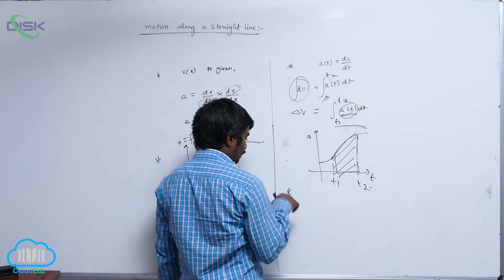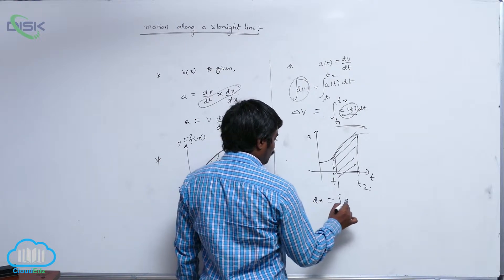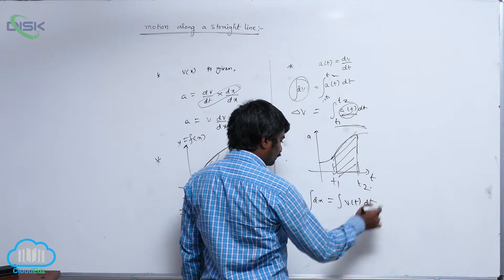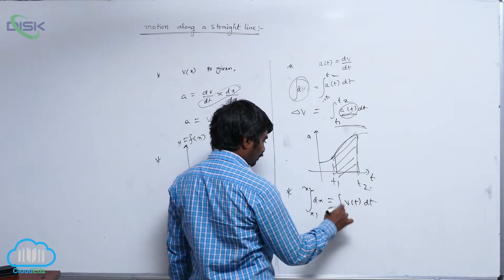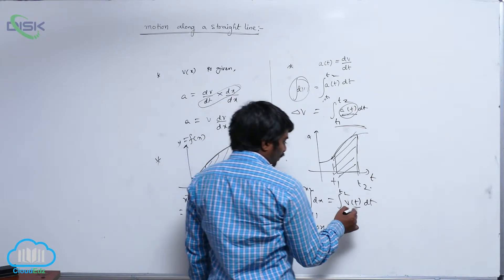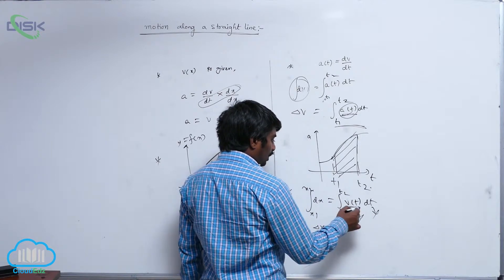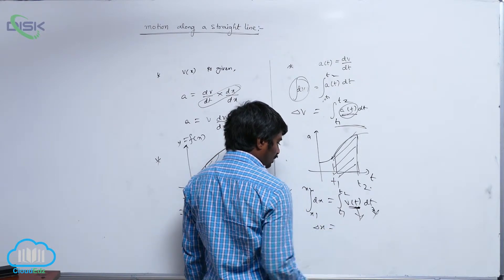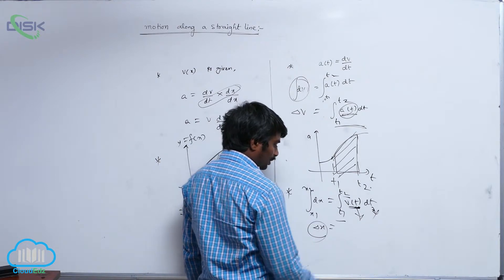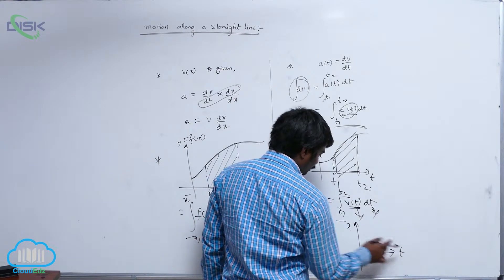Next, dx equals the integral of v of t dt, from x1 to x2 and from time t1 to t2. So this gives delta x. From the v-t graph, the area between the v-t graph and the time axis, between limits t1 and t2, gives you displacement. Suppose you want to calculate displacement from a v-t graph.